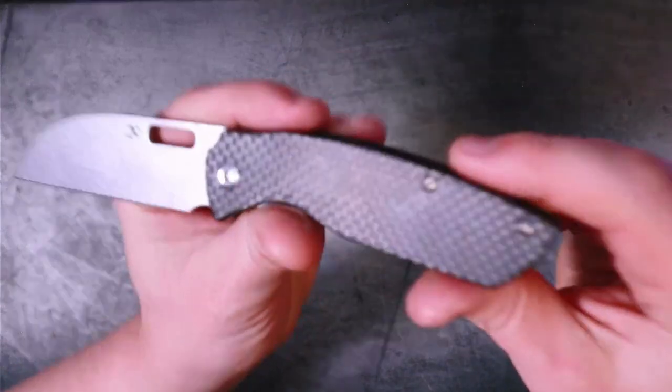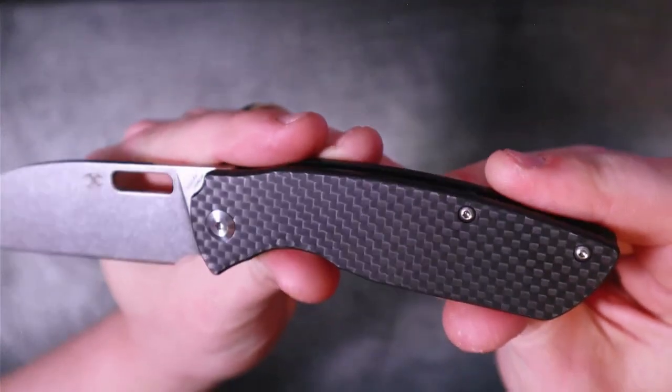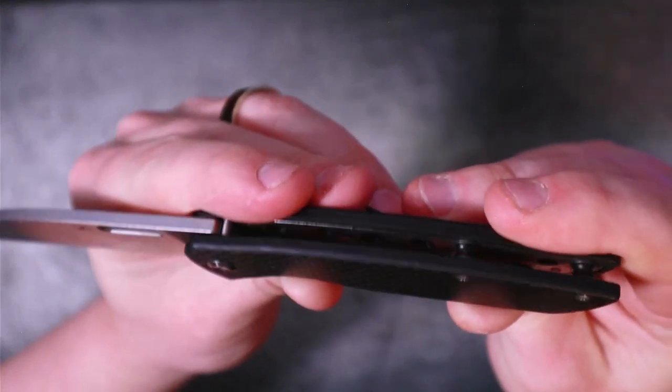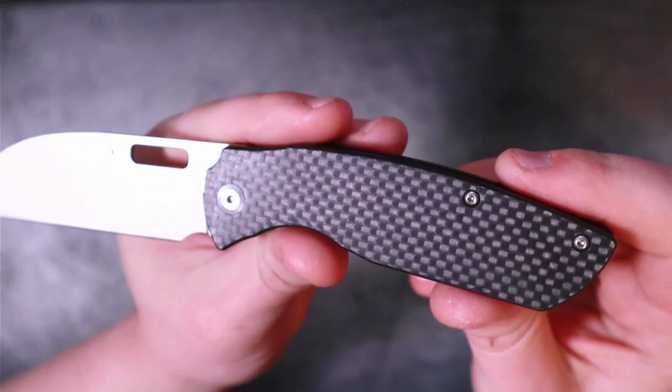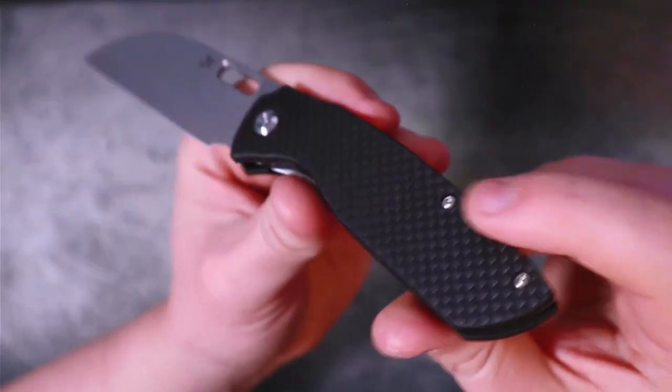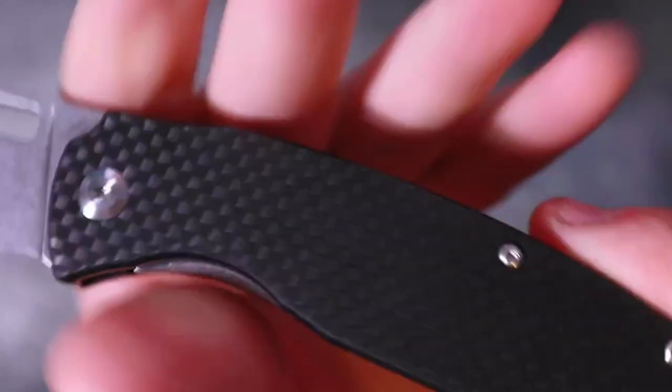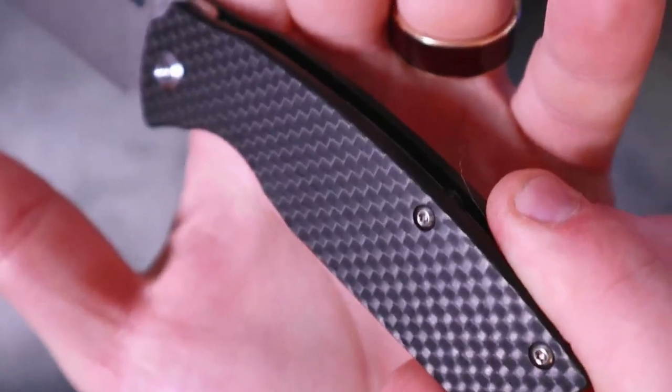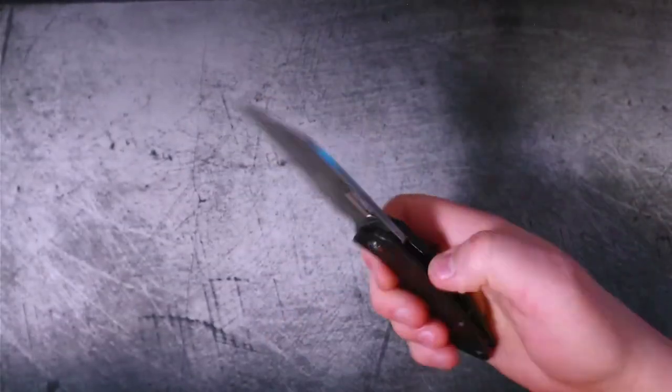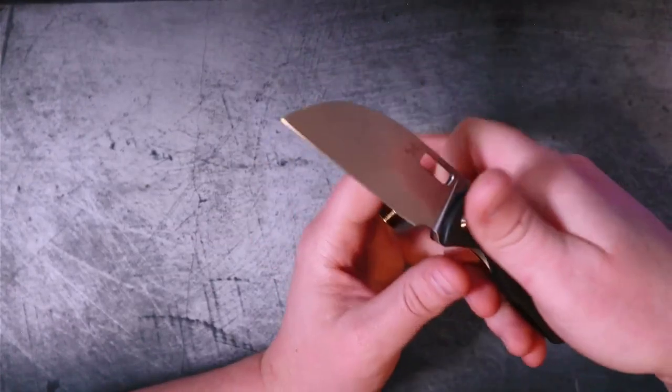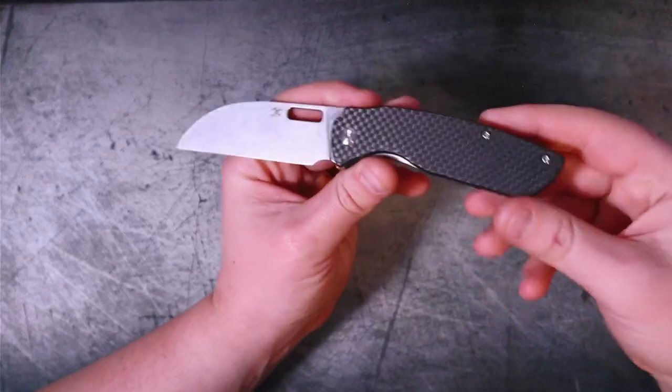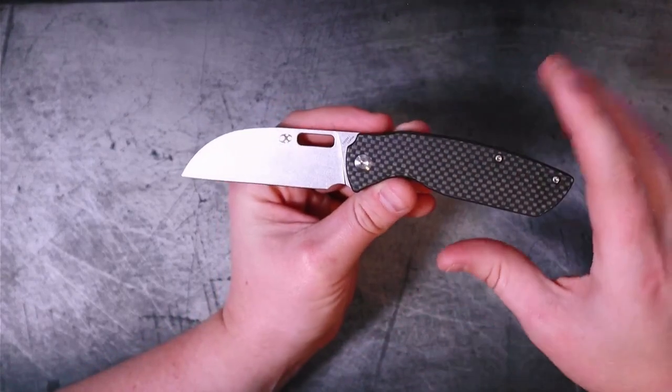We're looking at a, I'm going to call this a wharncliffe blade, a sheep's foot, whatever. It's a straight edge, obviously built for utility type purposes, thick behind the spine, flat grind, really thin behind the edge. These handle scales are peel ply carbon fiber, so no, they're not full carbon fiber, which is a bit of a bummer.